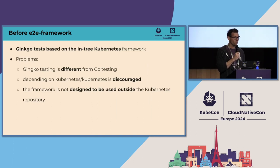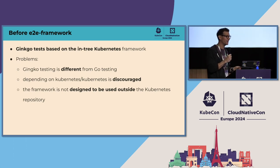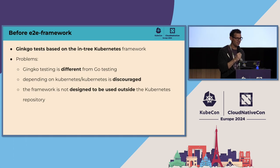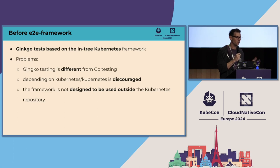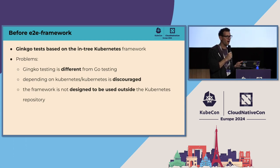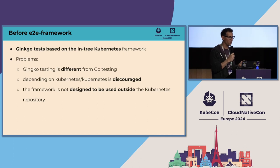What was our journey for testing? Like many, we started by importing the existing Kubernetes E2E framework. But like many, we ran into all the problems I was discussing at the beginning. You know Kubernetes as a repository is not designed to be easily imported — you need to do some hacks, it's very heavy. And when you need to update it you need to be careful. Not everyone was used to the Ginkgo way of doing tests.